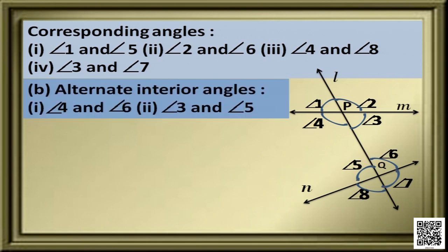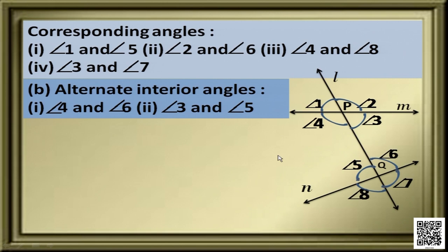Now let's come to alternate interior angles. Alternate means we skip one and take the next. Angles 4 and 3, 3 and 6, 5 and 6, 4 and 5 are consecutive angles, so we take non-consecutive angles. That means 4, skip 3, then 6 — so angle 4 is alternate to angle 6. Similarly, angle 3 is the alternate interior angle to angle 5. So we have two pairs of alternate interior angles: 4 and 6, and 3 and 5.